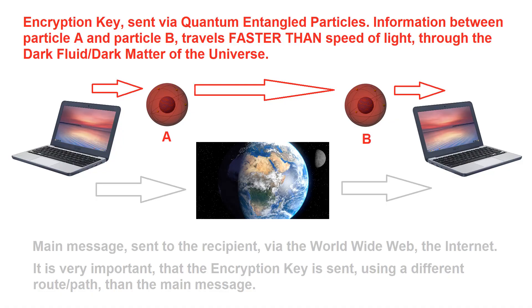We know for a fact that things can travel faster than the speed of light — a phenomenon called quantum entanglement, which is already being used practically by Chinese scientists to deliver encryption keys to recipients of encrypted messages. It is very important to deliver the encryption keys using a different channel than the encrypted information. Quantum entangled particles react synchronically, instantaneously, irrespective of the distance separating them. In other words, information between quantum entangled particles travels instantaneously, which means it must have travelled faster than the speed of light.